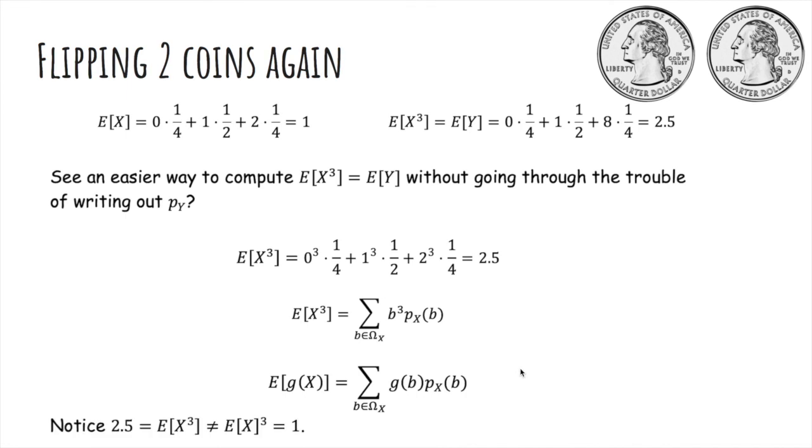Notice that the expected value of x cubed is 2.5, but the expected value of x quantity cubed is 1 cubed, which is 1. So the expected value of x cubed is not equal to the expected value of x quantity cubed.